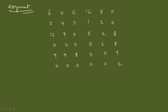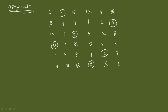For assignment, select the row or column with a single zero first. Row 3 has one zero — assign it; cancel that column's zeros. Row 4 now has one zero — assign it; cancel corresponding column. Row 2 now has one zero — assign it; cancel column. Row 1 now has one zero — assign it; cancel column. Row 5 has one zero — assign; last row then has one zero left — assign. All six assignments are made.